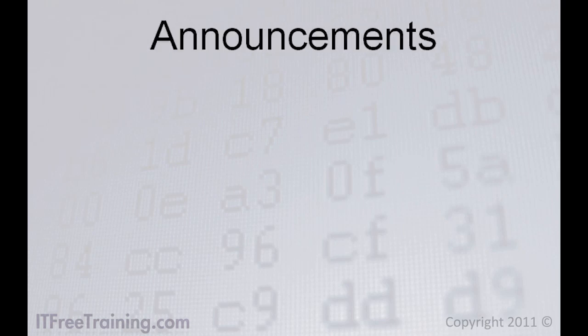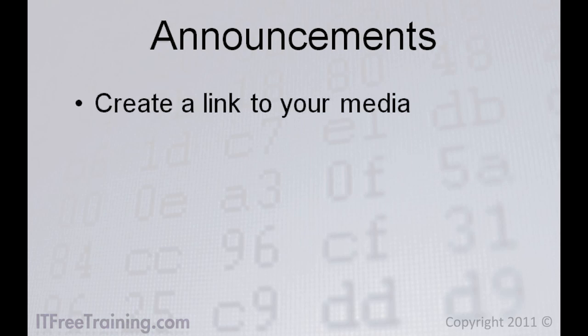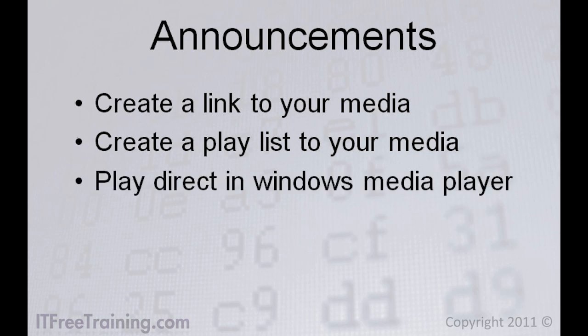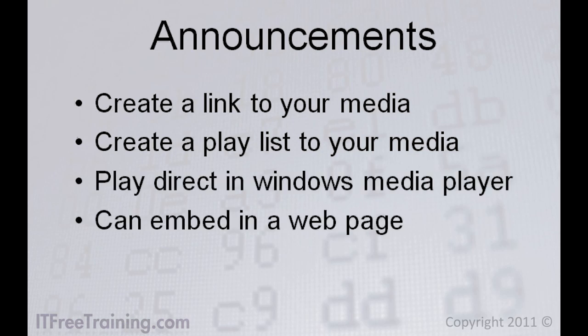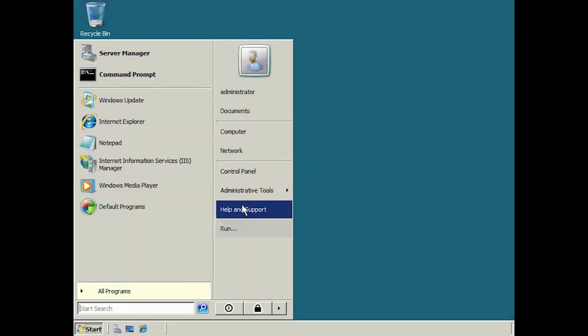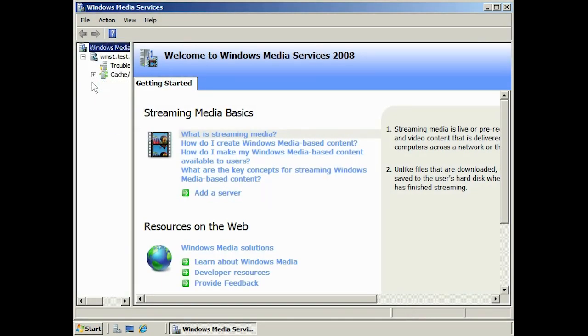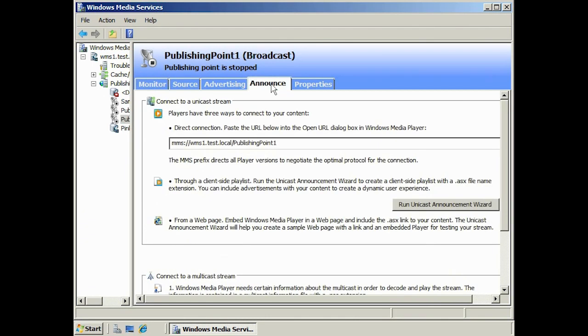Using Windows Media Services, you can create what is called an announcement. An announcement allows you to create a file that creates a link to your media — the user can open the file and be directed to your server to play the media. Using announcements, you can create a playlist for your media on your server, and play the media via Windows Media Player or even embed it in a webpage.